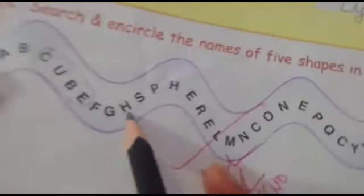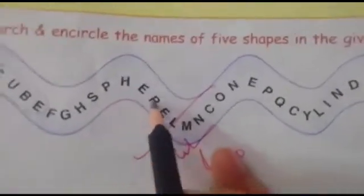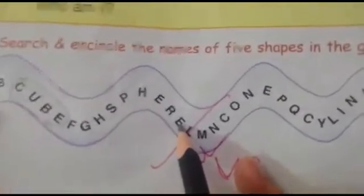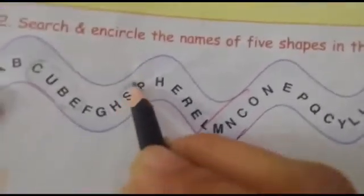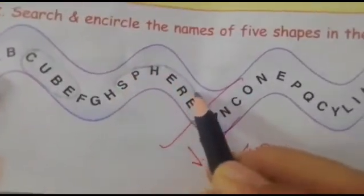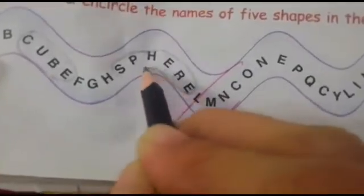F, G, H, S, P, H, E, R, E. Which shape is this? Sphere! We will encircle, okay.